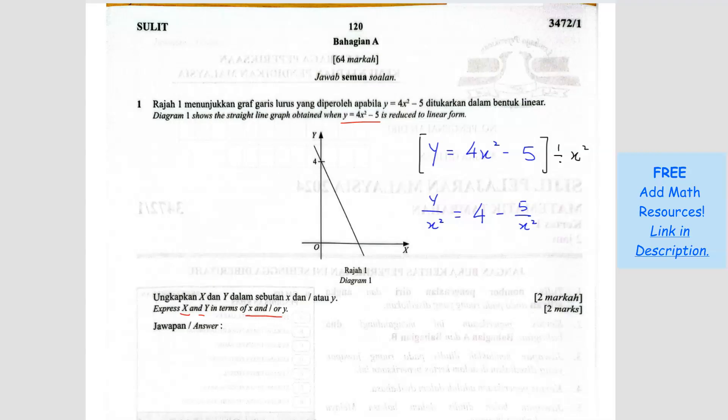So if I rewrite this, I can write it in terms of y equals mx plus c. So it will become y over x². And then this one I'm going to write in front. So it becomes negative 5, 1 over x² plus 4.